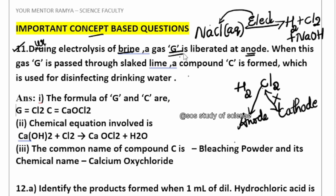So, which gas is released at anode? The chlorine gas is released at anode. This is the answer to the first part of the question.